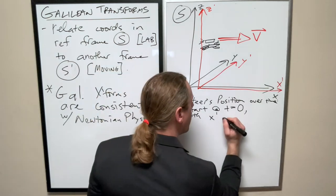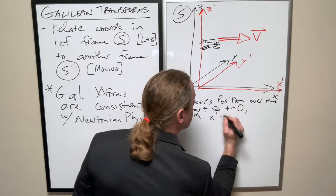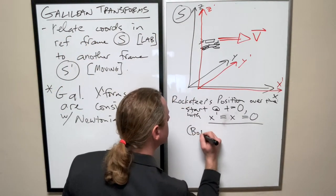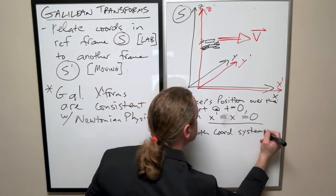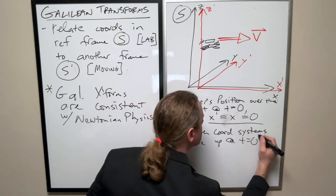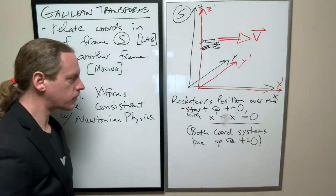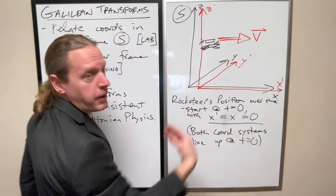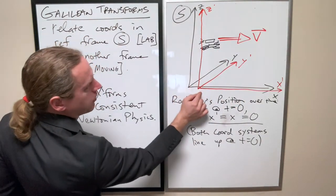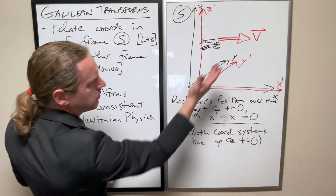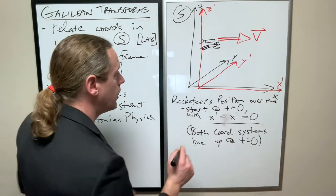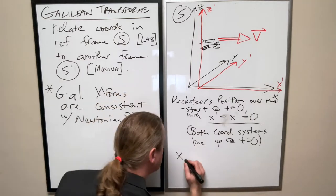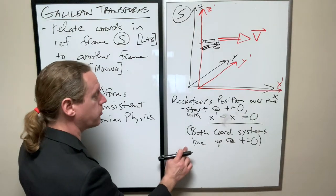Let's say we're going to start at T equals zero with his position here, with X prime equaling X equaling zero. Both coordinate systems line up at T equals zero. The snapshot that we got here is a little bit past T zero because he's moved beyond the origin there, maybe one second after T zero.